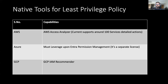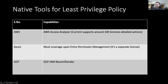The next question is: what are the different tools provided by all these cloud providers to come up with the least privilege policy? Within AWS, they have a feature in the IAM service called AWS Access Analyzer. Using Access Analyzer, it can help you come up with a least privilege policy. In Microsoft Azure, as per my understanding, there is no such feature to come up with the least privilege policy — the only option is to leverage upon Microsoft Entra Permission Management, which Microsoft acquired via CloudKnox and is a separate license altogether. On the GCP side, we can leverage the IAM Recommender. With the help of the IAM Recommender, it can help you come up with a least privilege policy.